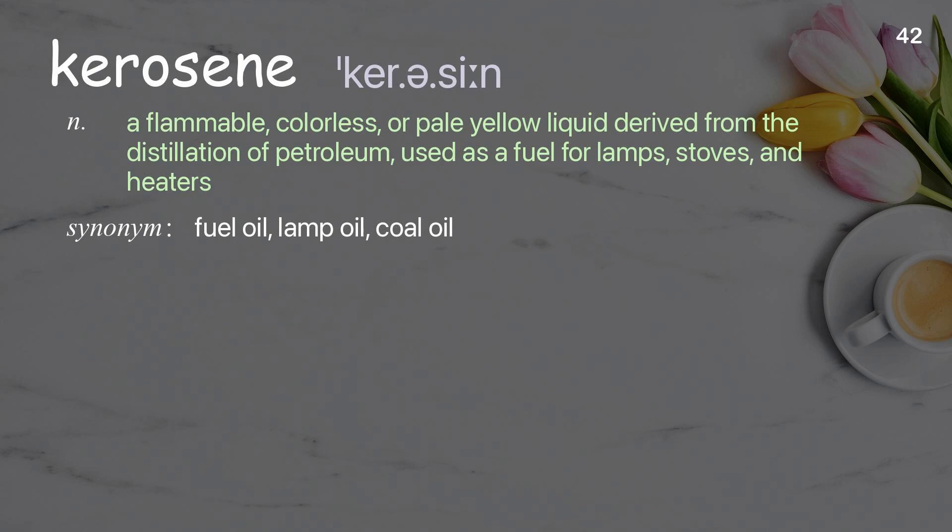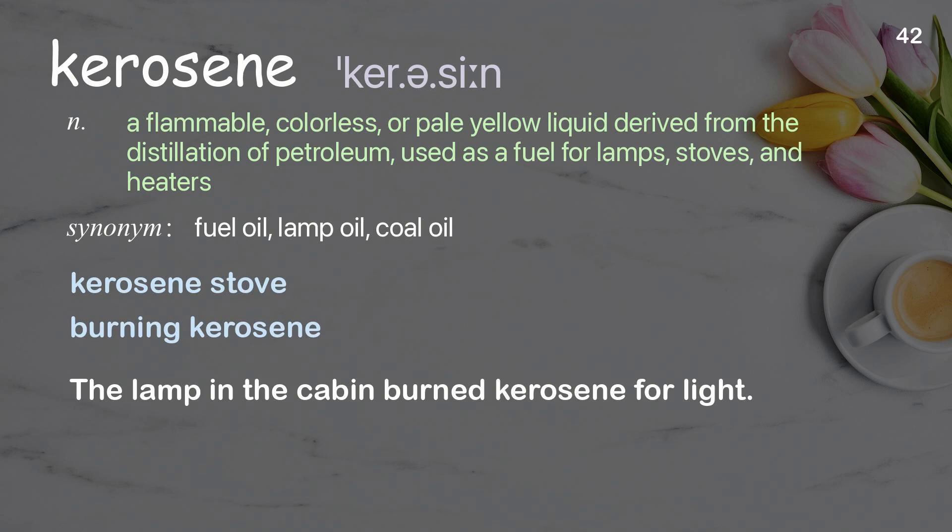Kerosene: A flammable, colorless, or pale yellow liquid derived from the distillation of petroleum, used as a fuel for lamps, stoves, and heaters. Examples: Kerosene stove. Burning kerosene. The lamp in the cabin burned kerosene for light.